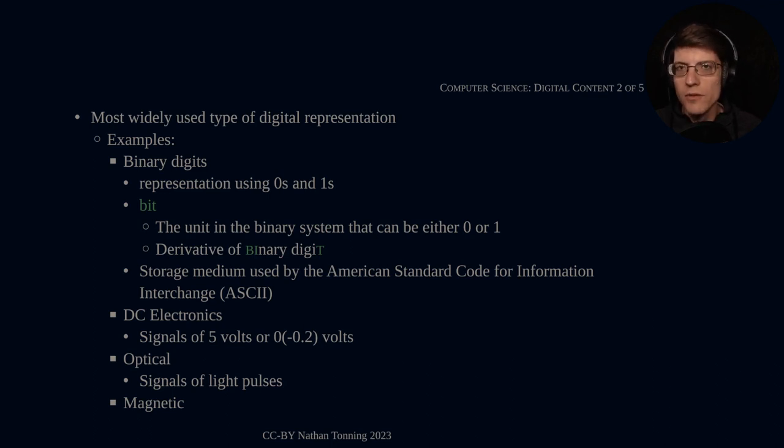Our second example of what binary is would be DC electronics. These are signals of five volts or zero volts, and these signals are pulses that are sent over time. A device or component that is listening for a digital signal would be looking for a high signal or a low signal—high meaning five volts, or zero. To be perfectly accurate, it's actually negative 0.2 volts, so it actually drops a little bit below.